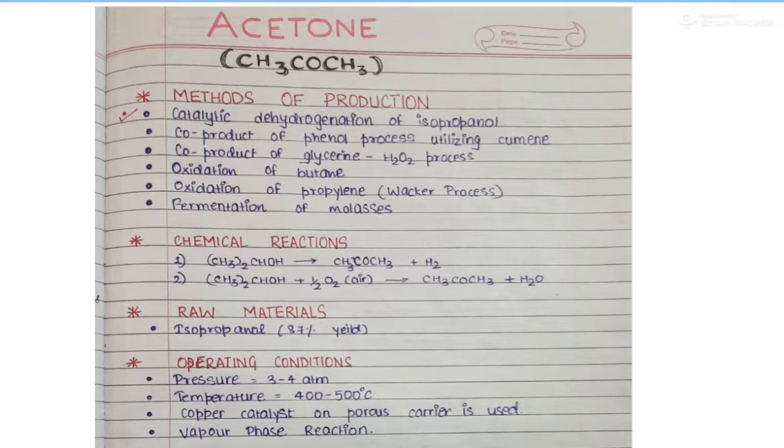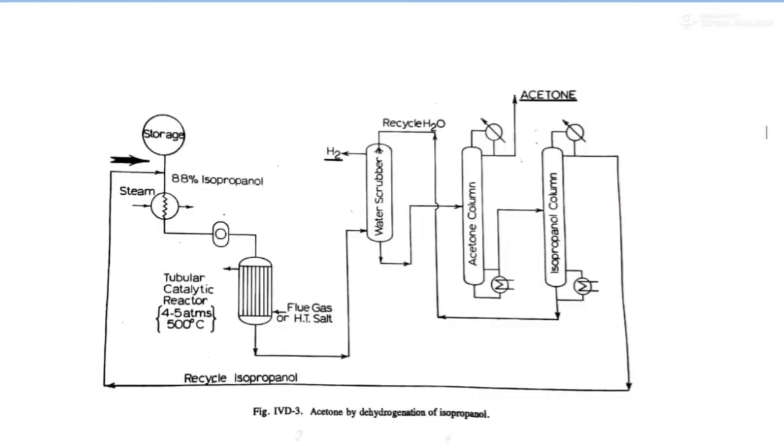Let us discuss the flow sheet for manufacturing of acetone by dehydrogenation of isopropanol. First of all, the isopropanol is heated using steam and is converted into vapors. Then it is compressed to about 4 to 5 atm. Now, this isopropanol is sent to a tubular catalytic reactor, which has copper or brass as a catalyst over a porous carrier.